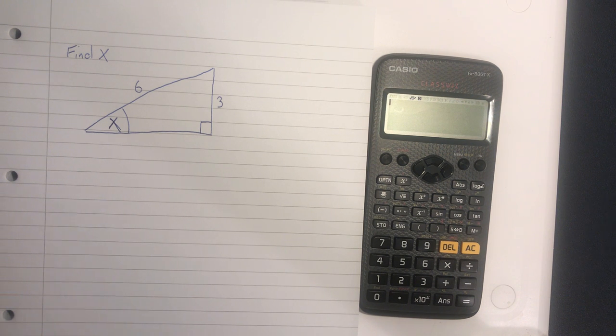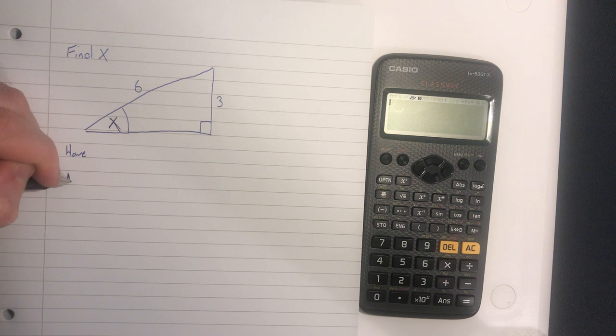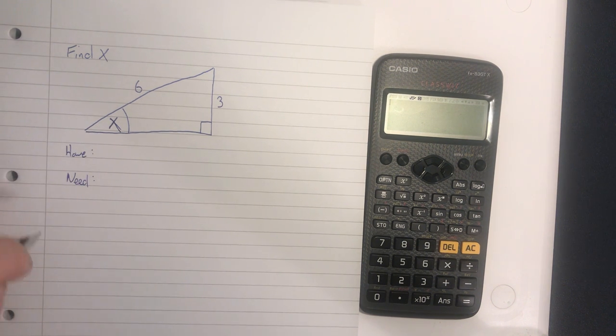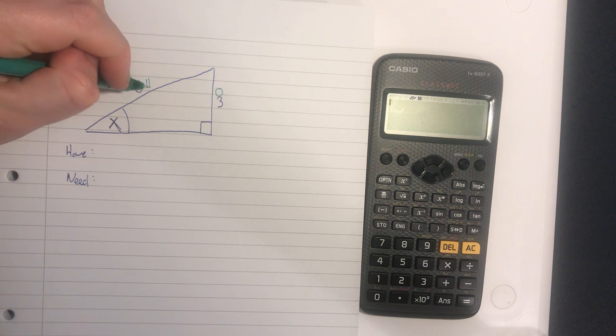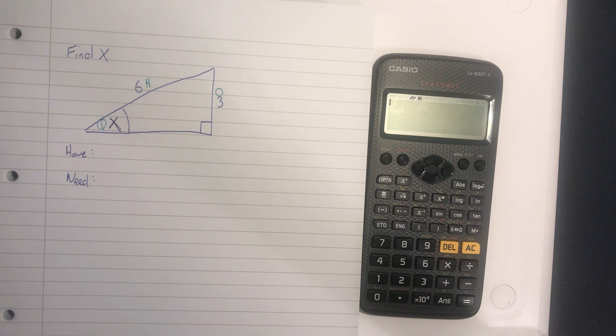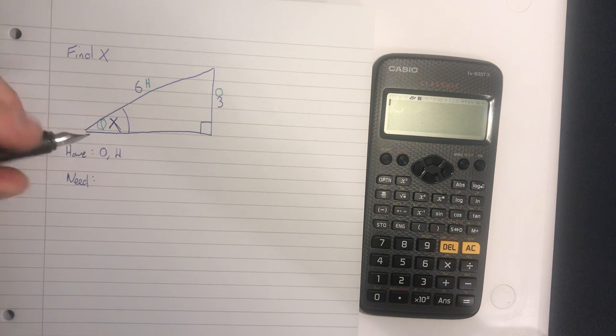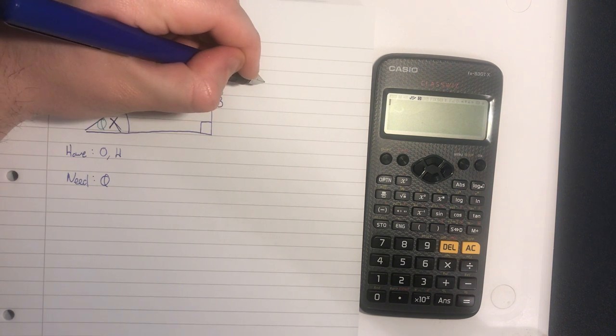We immediately write out what we have and what we need. We don't know what we have yet, so we should label it up. Let's label it up as opposite, hypotenuse, and theta. So we have O and H, and we need theta.